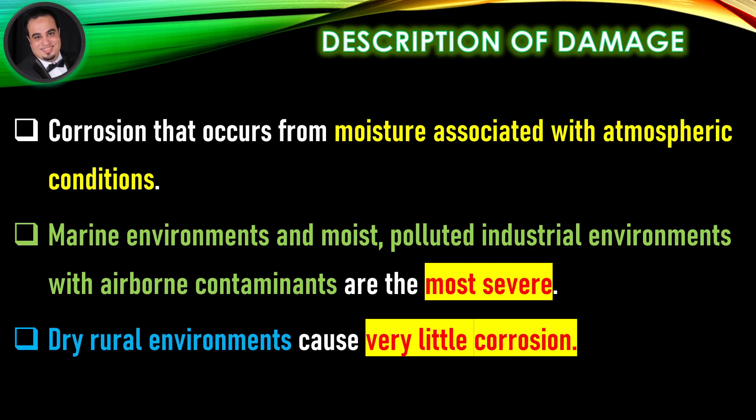Description of damage. Corrosion that occurs from moisture associated with atmospheric conditions, marine environments, and moist, polluted industrial environments with airborne contaminants are the most severe. Dry rural environments cause very little corrosion.